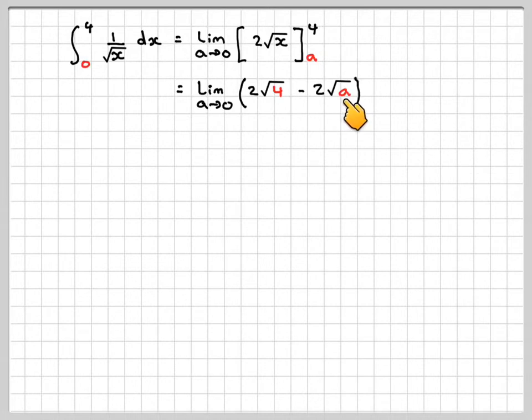So writing that out again, we're going to get the limit as a goes to 0 of 2 root 4 minus 2 root a. Now, as a goes to 0, the square root of a will also go to 0. So this bit here will become 0.